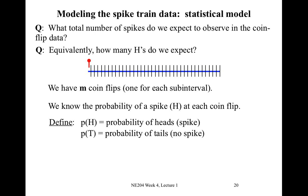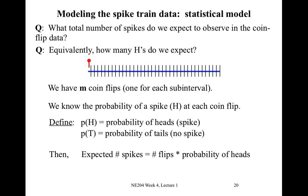Let's define some symbols for these probabilities. We'll call P(H) the probability of heads — flipping our coin and observing H — which we interpret as representing a spike. In the same way, P(T) is the probability of tails, or not observing a spike. The expected number of spikes when we perform M coin flips will be the number of flips times the probability of observing H. So we have M coin flips and probability P(H) of observing H on each flip, and that gives us the expected number of spikes.